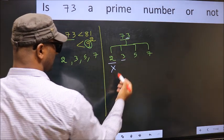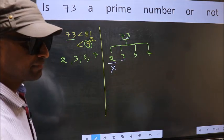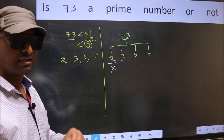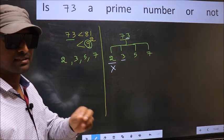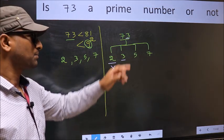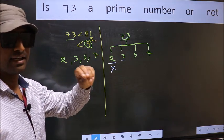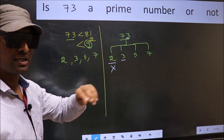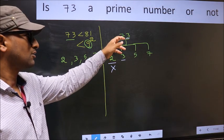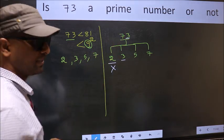Next number 3. To check divisibility by 3, we should add the digits. 7 plus 3, we get 10. And 10 is not divisible by 3. So this number also not divisible by 3.